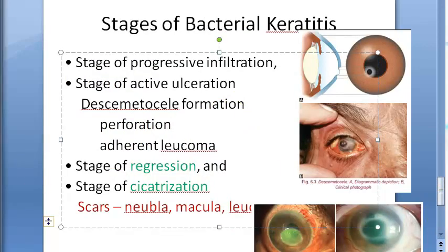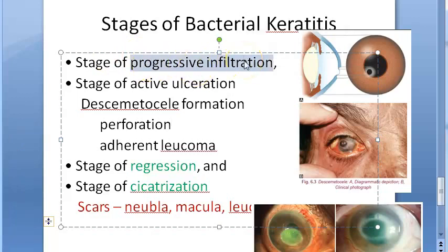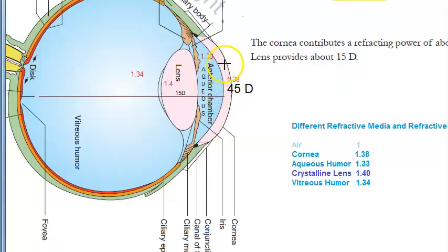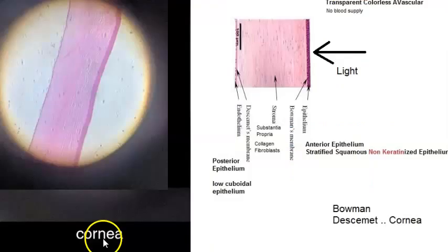Let us look at the stages of bacterial keratitis. Initially there is infiltration — progressive infiltration. In the infiltration stage you will see neutrophils and lymphocytes coming in, then necrosis. There is damage to the corneal epithelium.